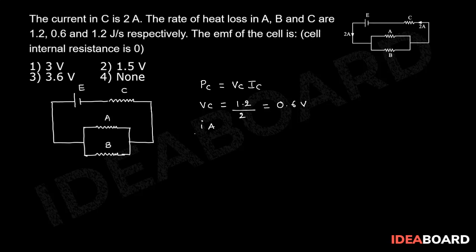Similarly, Ia by Ib which is equal to Pa by Pb that equal to 1.2 by 0.6 that is 2 by 1. Therefore, Ia is equal to 2 into 2 by 3 which is equal to 4 by 3.